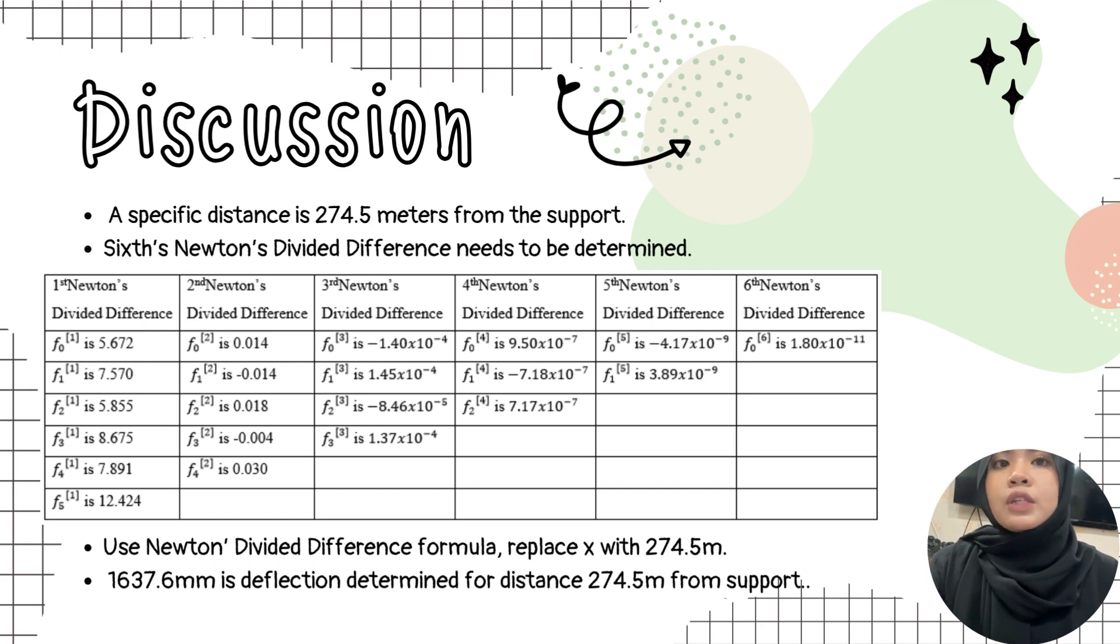For the first Newton divided difference, we got F0 until F5. Second one, we got F0 until F4. Third one, F0 until F3. Fourth one, F0 until F2. Fifth one, F0 until F1. And the last one, sixth Newton divided difference, we got F0 only. So, to use the Newton divided difference formula, we only consider the F0 value for the first until sixth Newton divided difference.